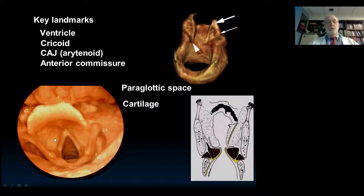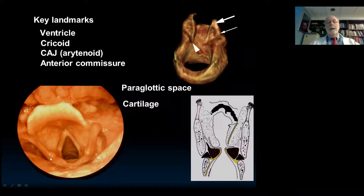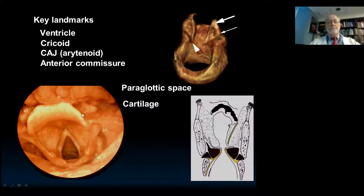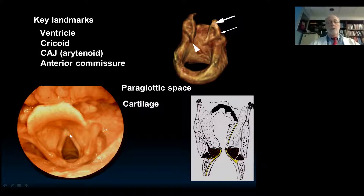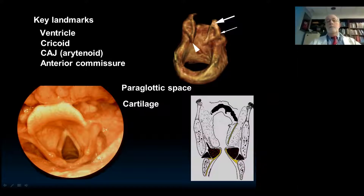The anterior commissure is where the cords come together. The paraglottic space is an important concept — this is really the radiologist's realm. This is the mucosa of the larynx. You can see how easy it is to be examined by a clinician; they look in and can see the entirety of the mucosa and make the diagnosis of cancer. We just tell them how far it's gone. The paraglottic space tends to be one of the areas we follow.